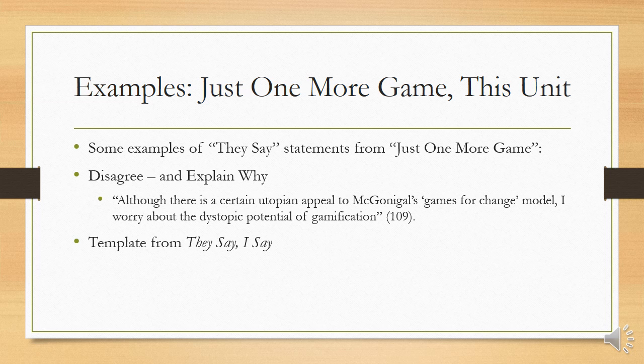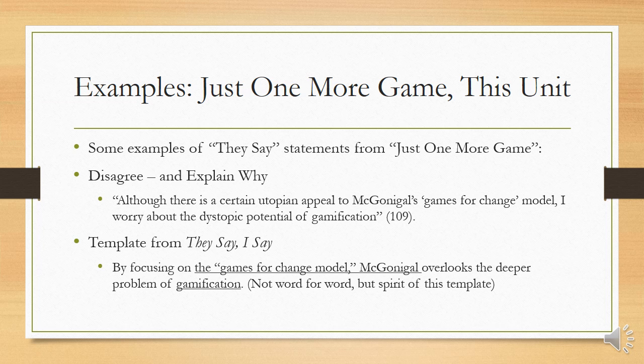If you look at the book, it has all those templates, and this would fall under the disagree and explain why category. One of the templates I've actually modeled here. The underlying parts are the fill-in-the-blanks, and the author's name is just an X — so I've filled in McGonigal's name. He's really using the template that says: 'By focusing on blank, X overlooks the deeper problem of blank.' What he's saying is, by focusing on the Games for Change model, McGonigal overlooks the deeper problem of gamification. I had to change his wording for it to fit with the template, but it's the spirit of this template — the same idea it's getting at.